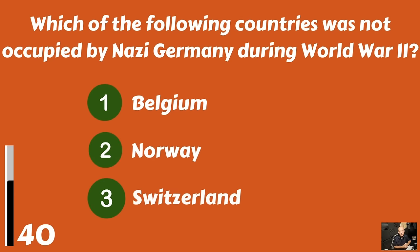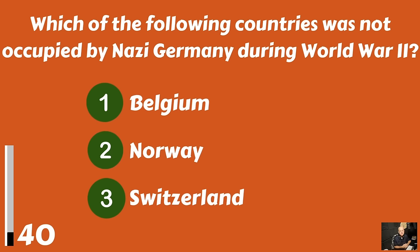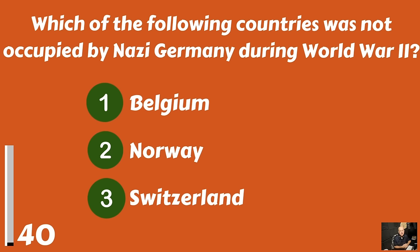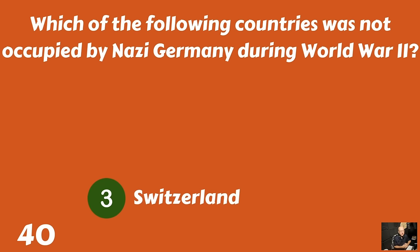Which of the following countries was not occupied by Nazi Germany during World War II? Belgium? Norway? Or Switzerland? And that would be Switzerland.